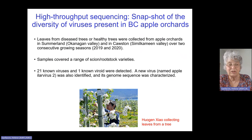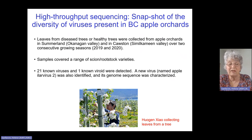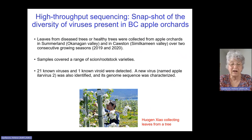This was the middle of the pandemic and we had obvious travel restrictions. However, we made sure that when we sampled, we covered a large range of scion and rootstock varieties, hoping to get good insights into the variety of viruses present in the region. We detected 21 previously known viruses and one previously known viroid, and we also detected a new virus, which we named Apple RLR virus 2, and we characterized its entire genome sequence.